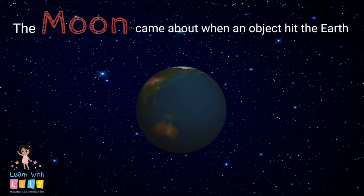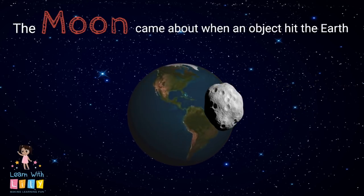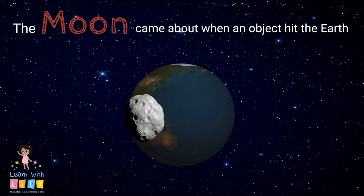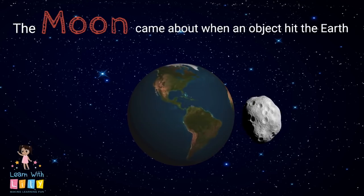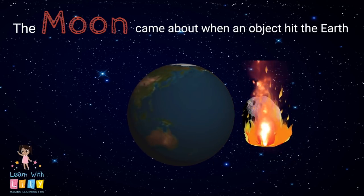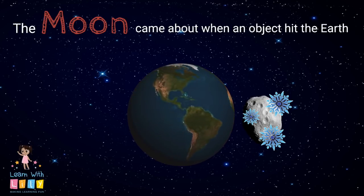The Moon came about when an object hit the Earth. This object blasted out rocks that all came together and orbited around the Earth. While orbiting the Earth, these rocks eventually all melted down. After that, they cooled, and then they became the Moon.